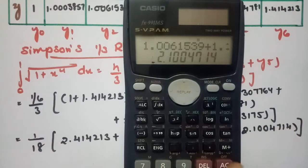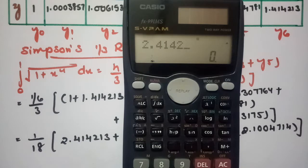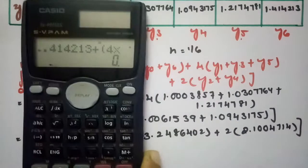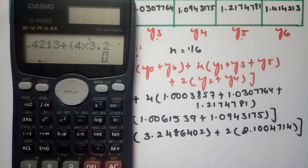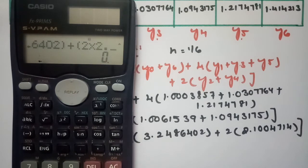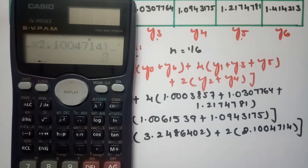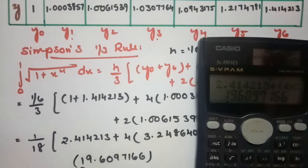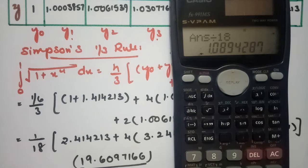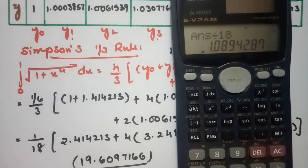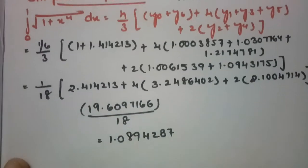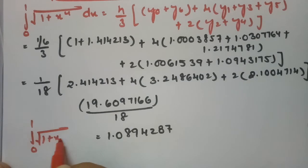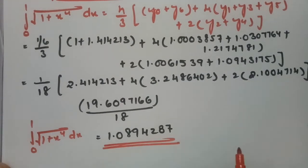Computing: 2.414213 + 4×3.2486402 + 2×2.1004714 = 19.6097166. Dividing by 18 gives 1.0894287. This is the value of ∫₀¹ √(1+x⁴) dx according to Simpson's 1/3 rule.